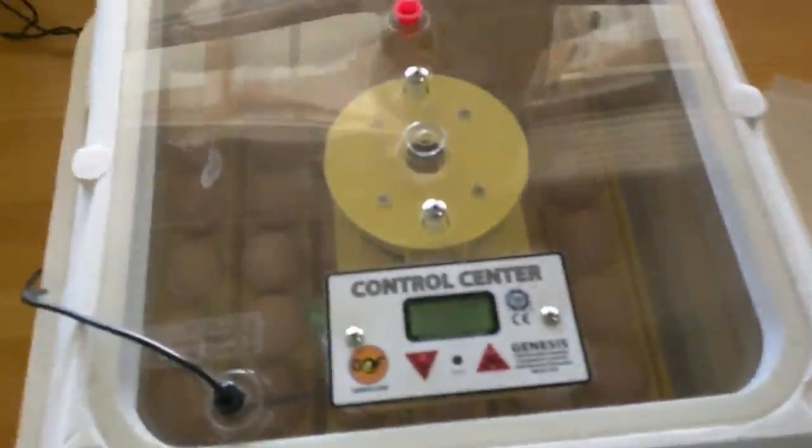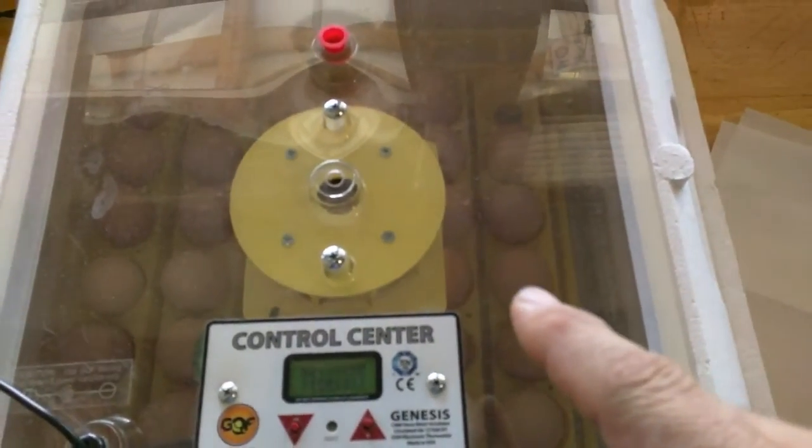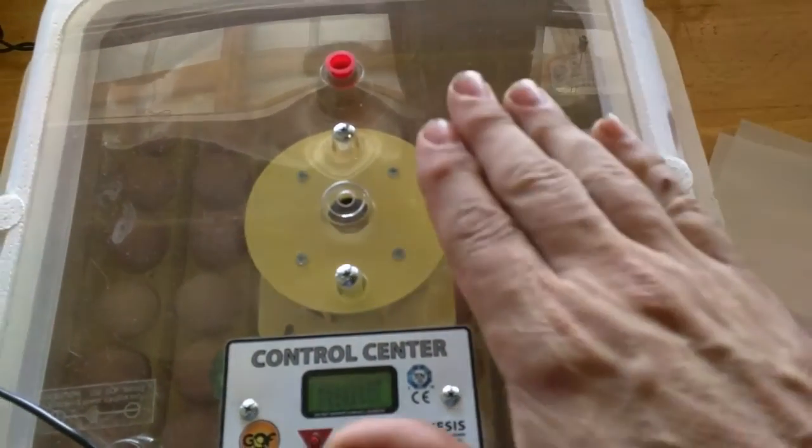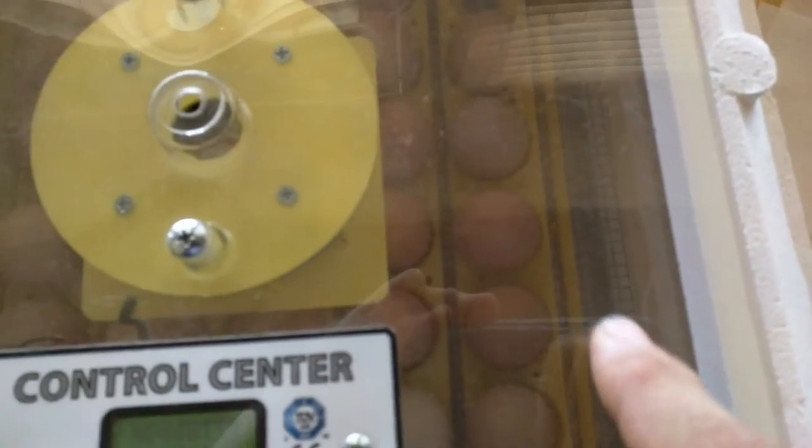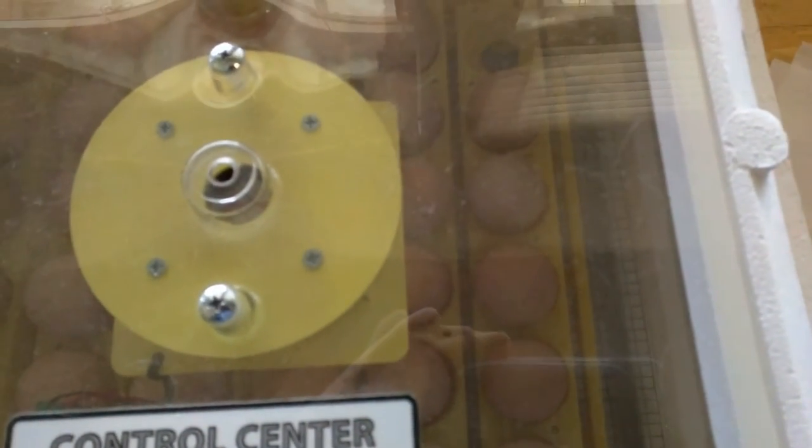Okay, today's day 17. As you can see, the eggs are in there. Today we take them off the auto turner and put them down. Now you can see there's a little wire mesh down there. I put paper towels over that.